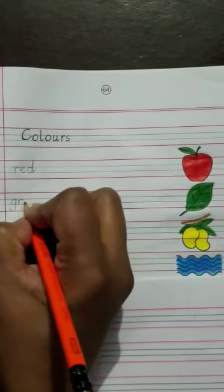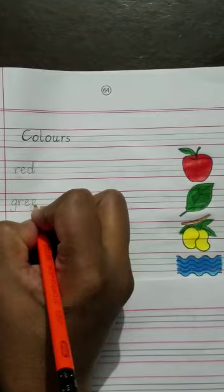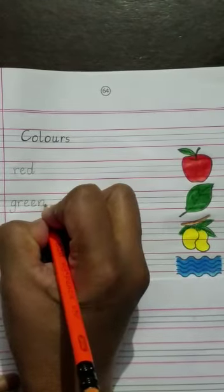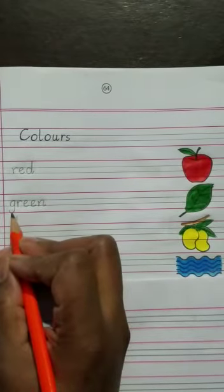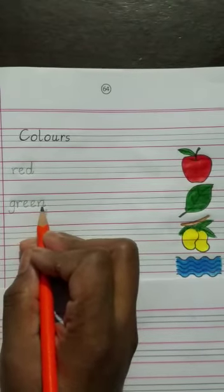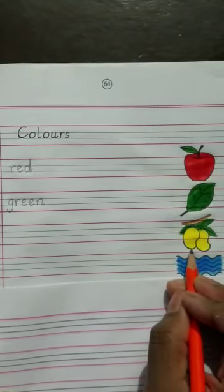Now children, spell green: G-R-E-E-N, green.